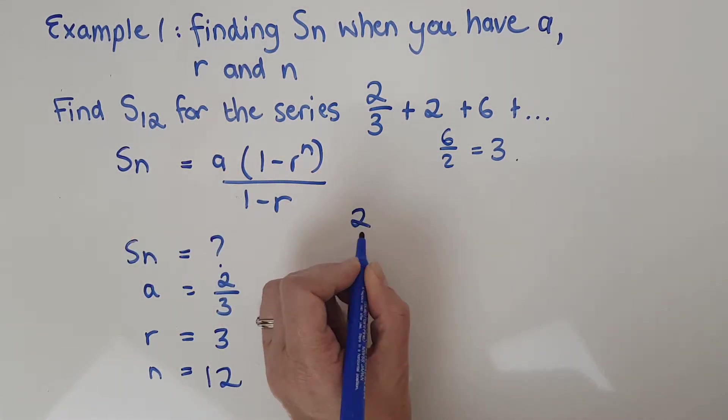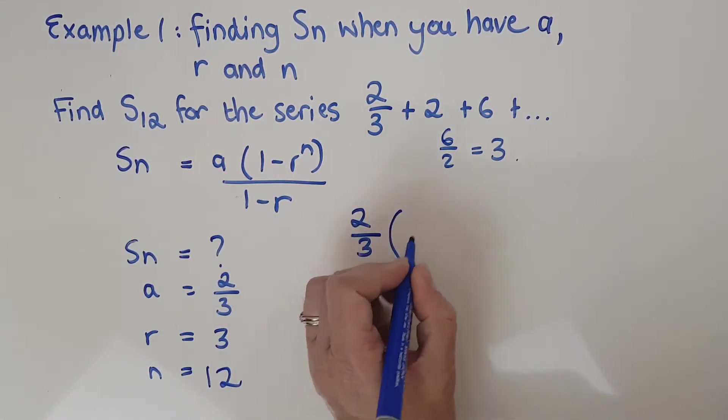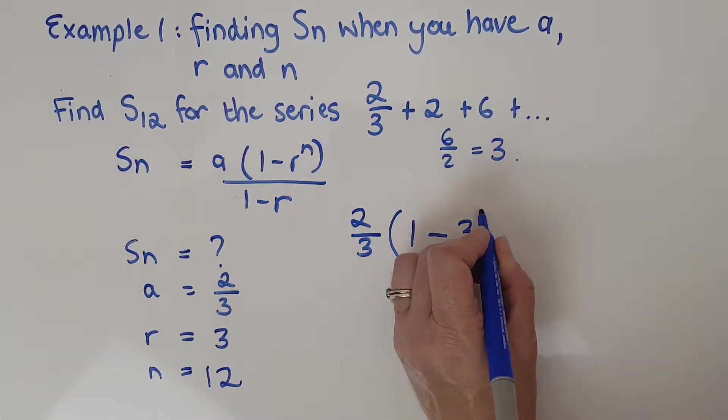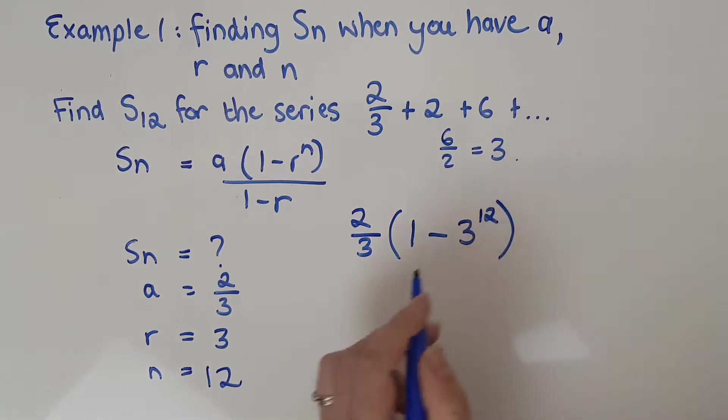My a is 2 thirds. I then have 1 minus r, which is 3, to the n, which is 12, over 1 minus 3. So that gets me, just plug and play into calculator and pause before you check my answer out.